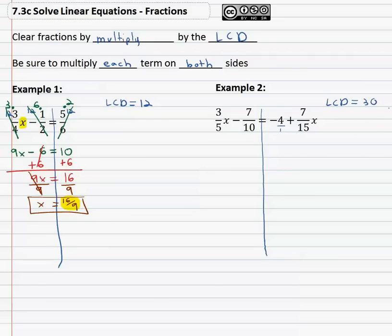We can do 30 divided by 5, 30 divided by 10, 30 divided by 15. The least common denominator is 30, so we're going to multiply each term on both sides by the 30. Notice that includes the negative 4, every term.